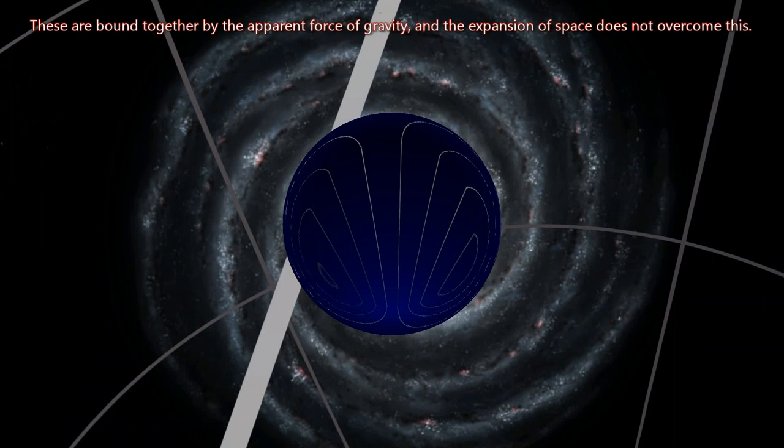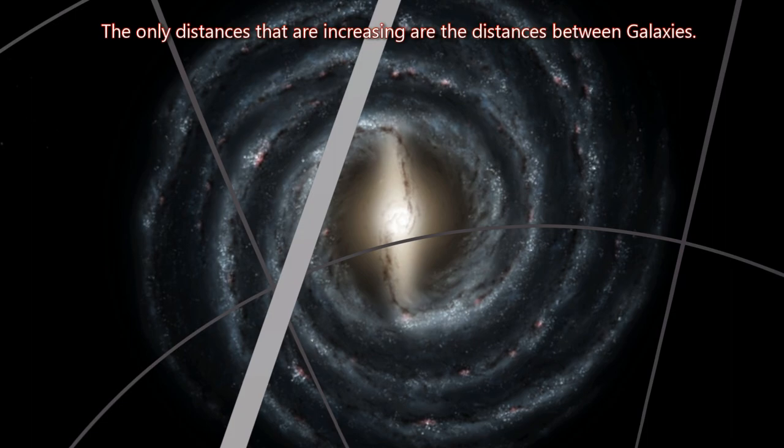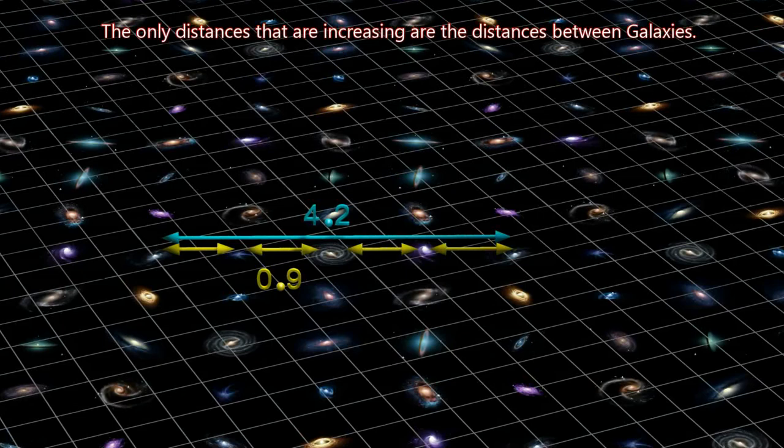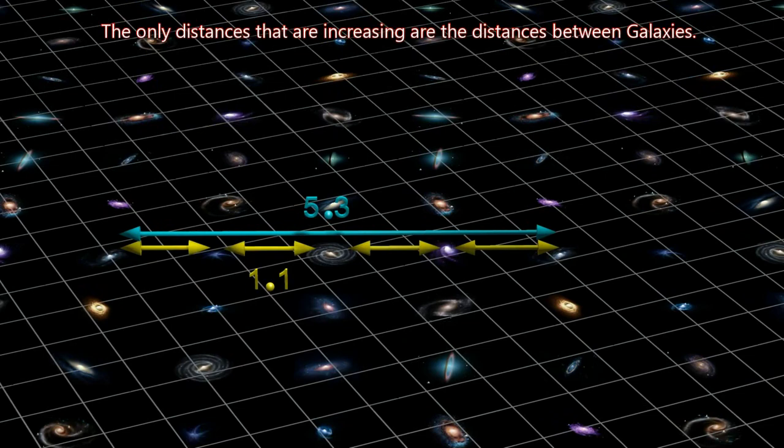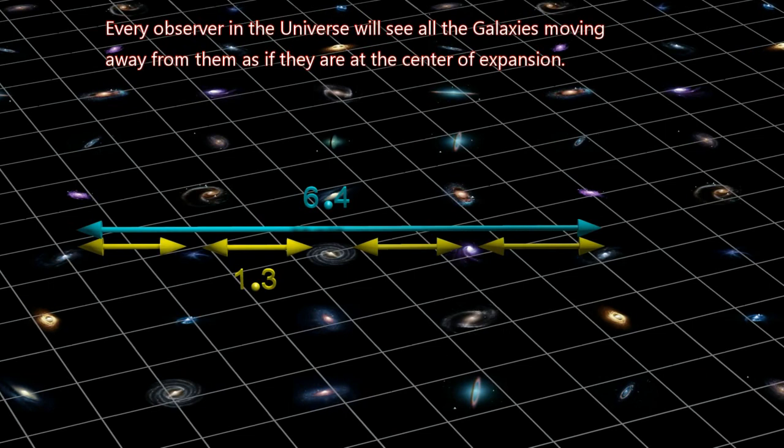The only distances that are increasing are the distances between galaxies. Every observer in the universe will see all the galaxies moving away from them as if they are at the center of expansion.